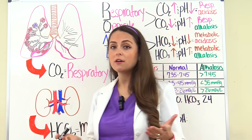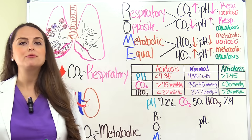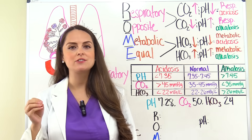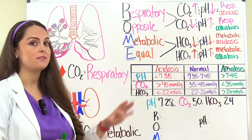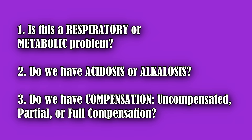Whenever you are solving these arterial blood gas problems, there are three things you want to ask yourself, along with applying the method you're using. First, is this a respiratory or metabolic problem? Second, do we have acidosis or alkalosis? And third, do we have compensation? You're either going to have no compensation — uncompensated — partial compensation, or full compensation. I'm going to show you how to solve problems with all three different scenarios.